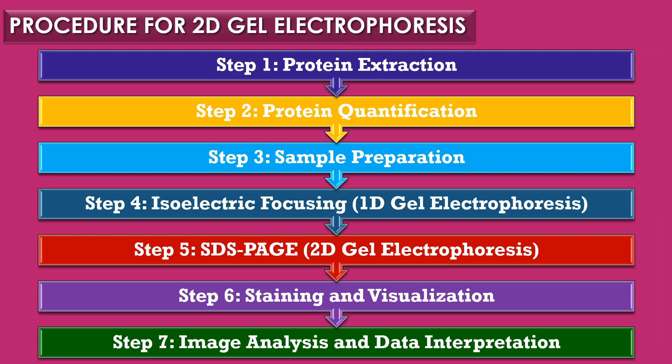The procedure for two-dimensional gel electrophoresis involves seven steps: step one is protein extraction, step two is protein quantification, step three is sample preparation, step four is isoelectric focusing or first-dimension gel electrophoresis, step five is SDS-PAGE or second-dimension gel electrophoresis, step six is staining and visualization, and step seven is image analysis and data interpretation.